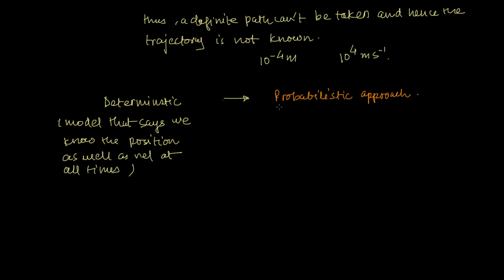The probabilistic approach says that there is always an error in determining the position and the velocity of an electron.